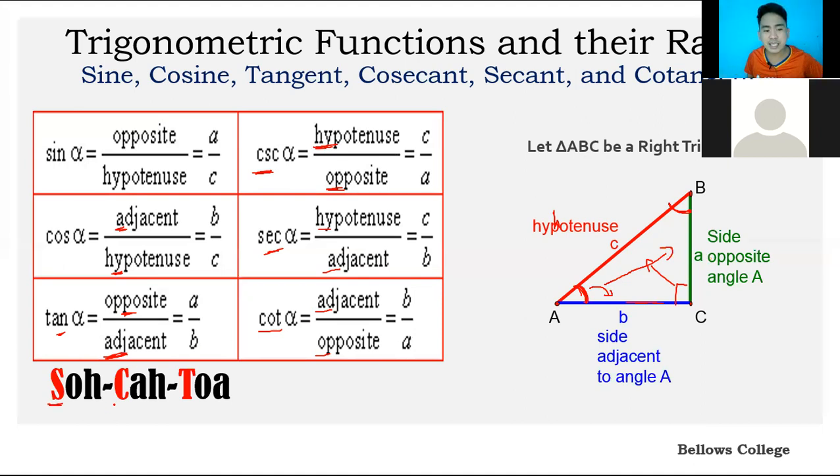The red letters S-C-T are the basic trigonometric functions: sine, cosine, tangent. The OH, AH, and OA are the ratios. O stands for opposite, H for hypotenuse, A for adjacent. This is the formula. So sine equals O over H, opposite over hypotenuse.